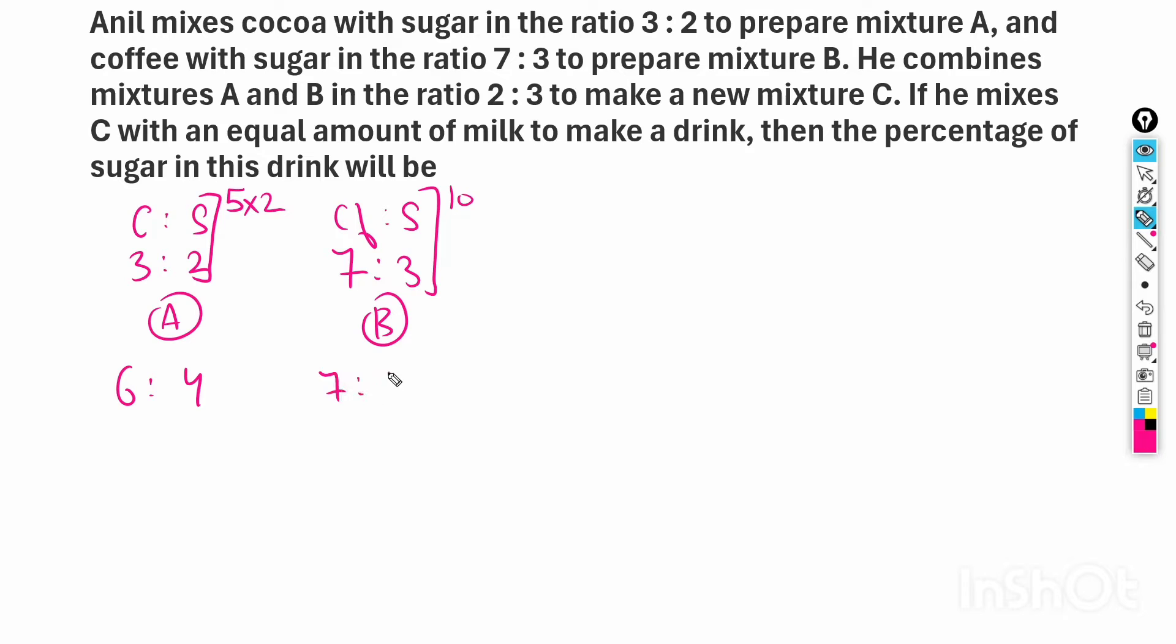It will be 6 to 4, and this will be 7 to 3. Now the value of 10 is correct. If he adds 2 parts of A, it means 6 to 12 and 4 to 8. He adds 3 parts of B, so 7 times 3 is 21 and 3 times 3 is 9.